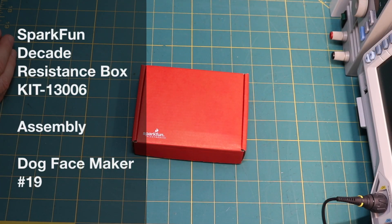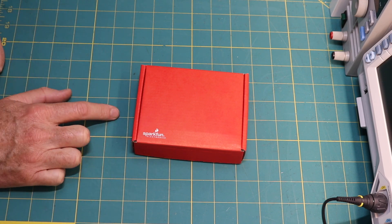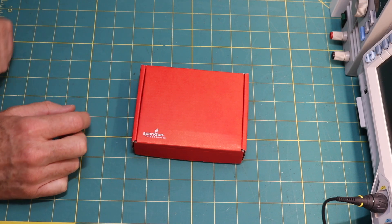Dogface here. Today we're going to talk about the SparkFun Decade resistance box. It is kit number 13006.